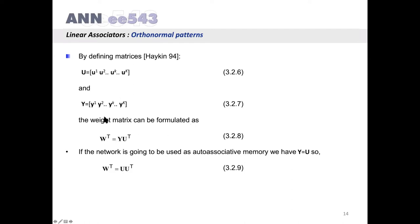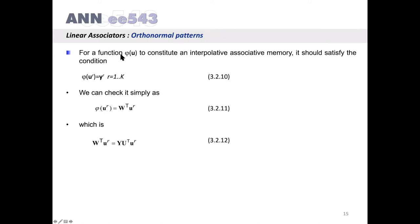If U and Y are defined this way, the weight matrix can be formulated as: W^T = Y · U^T. If the network is used as auto-associative memory, then Y is the same as U, so the W matrix becomes W^T = U · U^T. For φ(U) to constitute an interpolative associative memory, it should satisfy the condition that when one of the stored patterns UR is applied as input, the mapping results in the corresponding YR, for R from 1 to K.